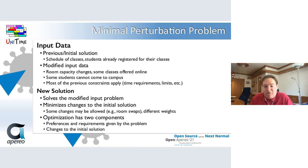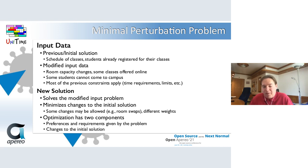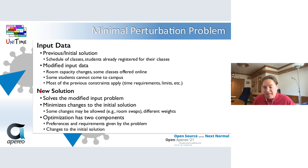Here is a brief description of what we mean by the Minimal Perturbation Problem. We have input data, which is typically the previous or the published solution — for instance, a class schedule. Next, we have modified input data. For instance, in case of the pandemic, we needed to change the capacity of rooms to improve social distancing or make some classes online. These input data changes usually break the previous solution — like a class can no longer be placed in its room because the room is now too small. The solution to this MPP problem is a new schedule that solves the modified problem, with the aim of minimizing changes to the initial published solution. We can also consider some changes as not allowed or with different penalizations — for example, prohibiting or extremely penalizing time changes while room changes are still acceptable.